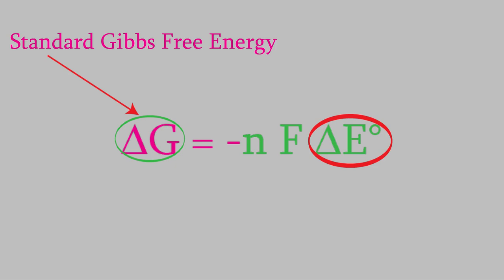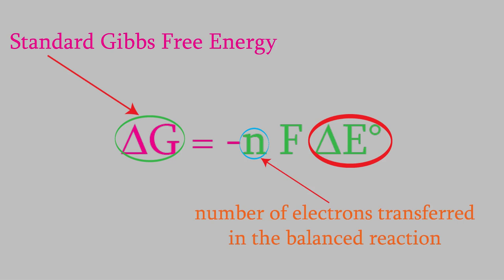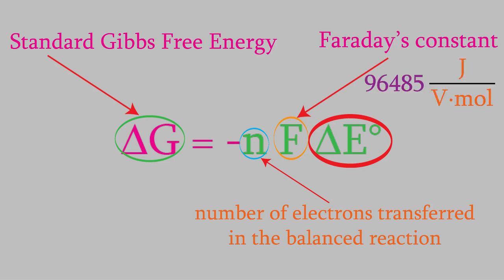The other two variables in the equation are new for us. N is the number of electrons that are transferred from the anode to the cathode in the balanced redox reaction, and F is a new constant for us called the Faraday constant, and it always has the value 96,485 joules over volts times moles.